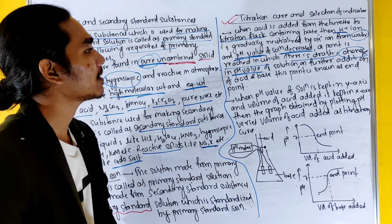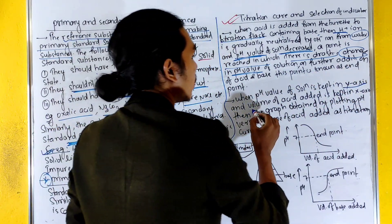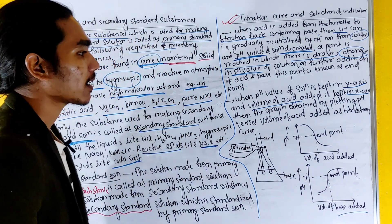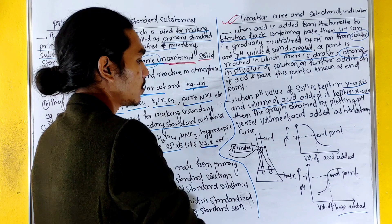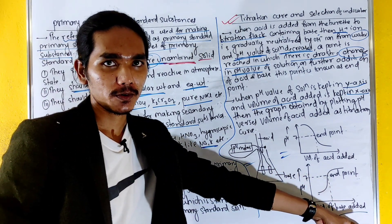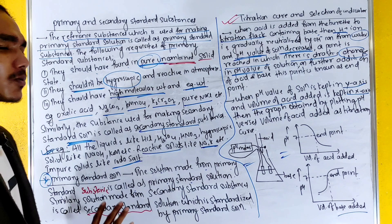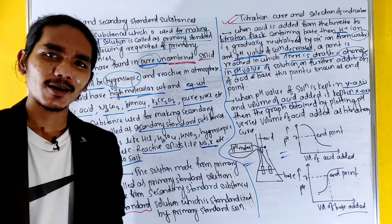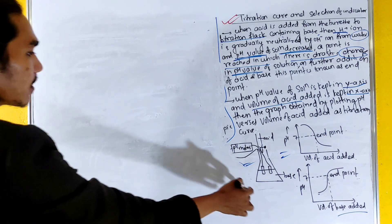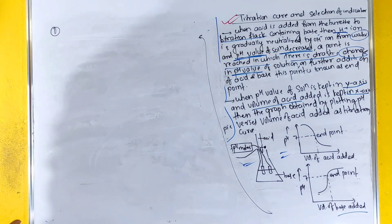On the titration curve graph, pH value is placed on the y-axis and volume of acid or base taken is placed on the x-axis. This gives us the titration curve graph. Now, for strong acid and strong base titration, we discuss the titration of a strong acid with a strong base.